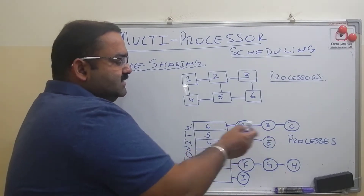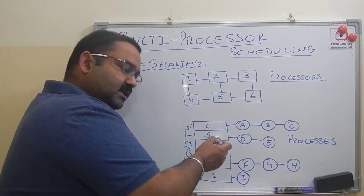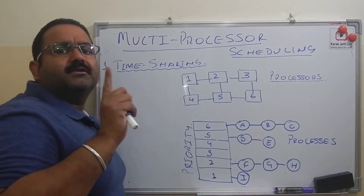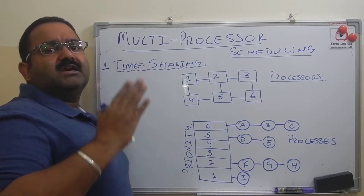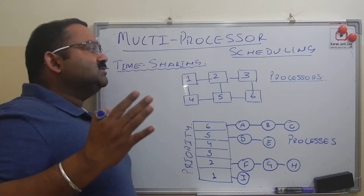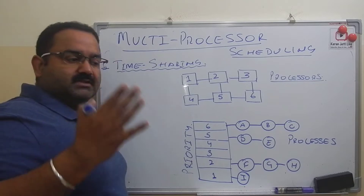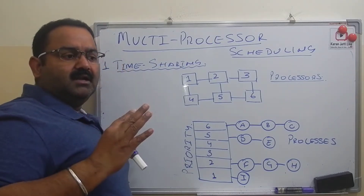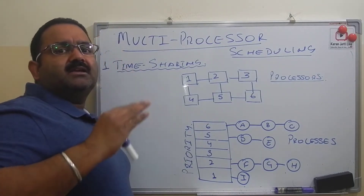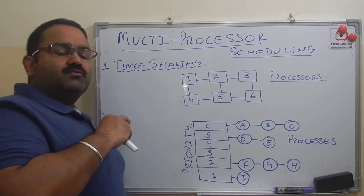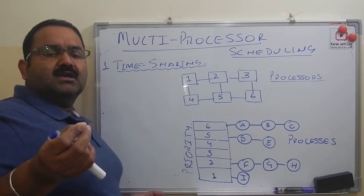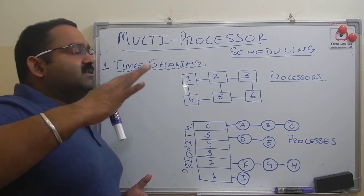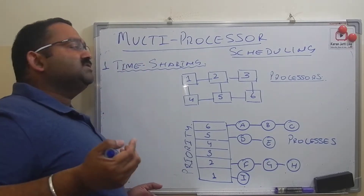For example, processes A, B, C have the highest priority; D and E come after that; and process I has the lowest priority. All these processes are non-related to each other — meaning they can all run independently without exchanging any data or values between each other. When we have multiple processes that are independent and all have some level of priority, we can apply time sharing scheduling.